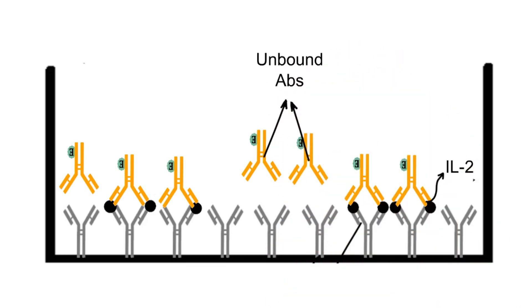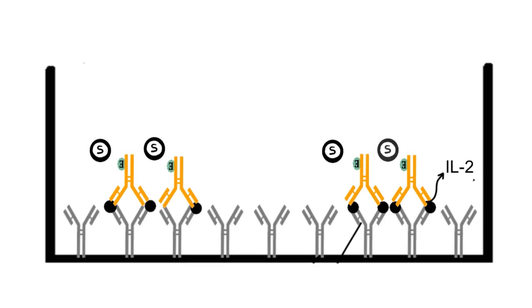These unbound antibodies are then removed by washing the well with the help of buffer. In the next step, chromogenic substrate is added to the well.